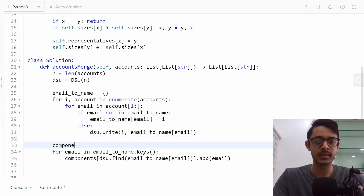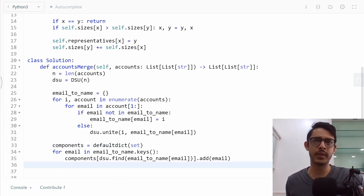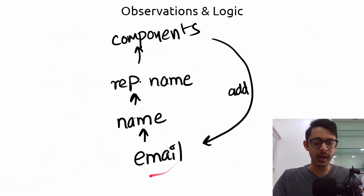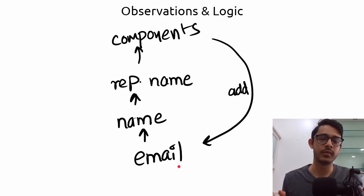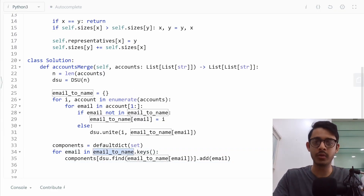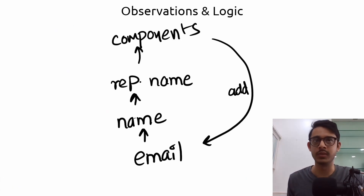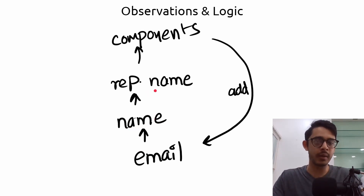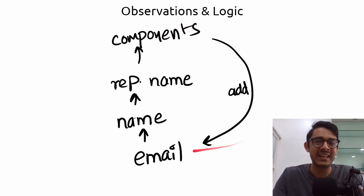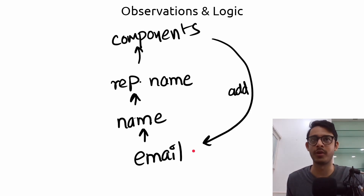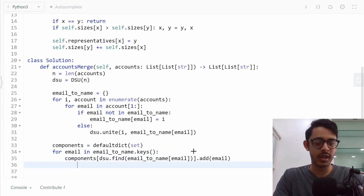Since email_to_name is a dictionary, all keys are unique, so we're iterating over unique emails. For each email we find the name index, find its DSU representative, and add the email to that representative's component. This builds a mapping from each representative person to their full set of emails. It's a bit circular to explain visually but that's exactly what we're doing.